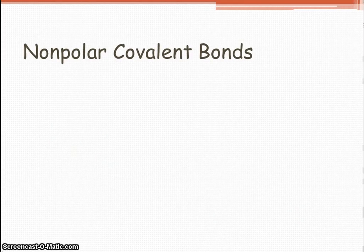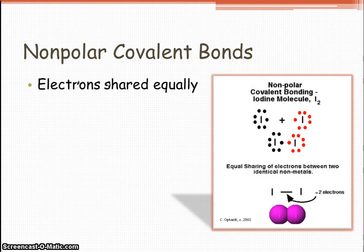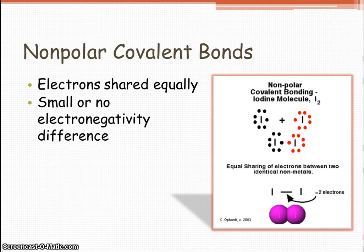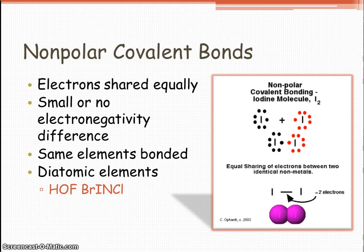Nonpolar covalent bonds. So electrons are shared equally. So nonpolar is when you have electrons being shared equally. So there is small or no electronegativity difference. Typically, it's the same elements being bonded. And so let's think of our diatomic elements. You know, Mr. Hoffbrinkle, the man who never likes to be alone. So Hoffbrinkle being hydrogen, oxygen, fluorine, bromine, iodine, nitrogen, chlorine.